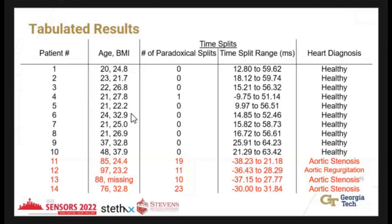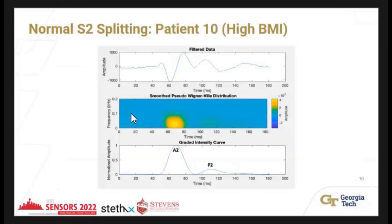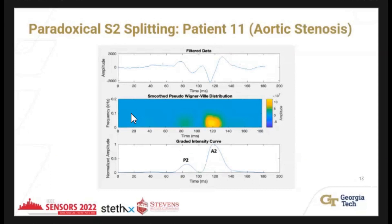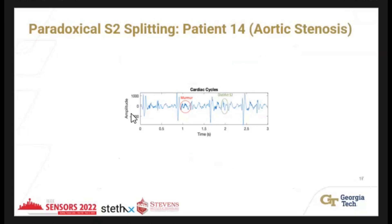This is an example from a patient with high BMI of around 38 — despite the higher fat content, we were still able to capture A2 and P2 sounds. This patient had a high split of around 45.82 milliseconds between A2 and P2. This is an example of paradoxical splitting: in the filtered data you can see P2 curves first, then A2 curves afterwards. The distribution and the gradient intensity curve both confirm P2 occurring before A2.